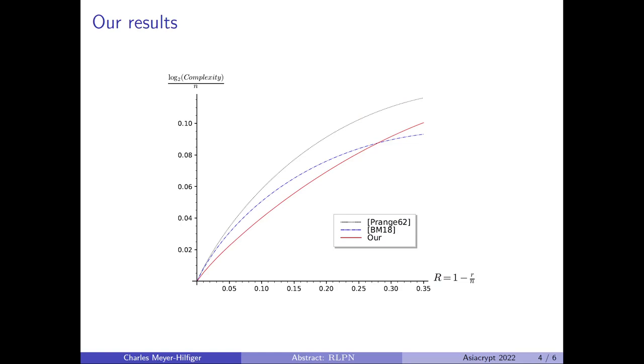Here, I have plotted the complexity exponents of three algorithms, depending on the rate of the code. In black, you have Prange algorithm, which is the simplest of the ISDs. In blue, you have BJMM18, which is the state of the art of the ISDs. And in red, you have our algorithm.